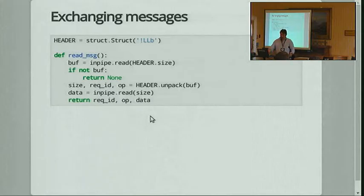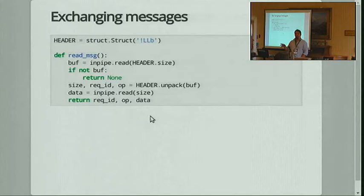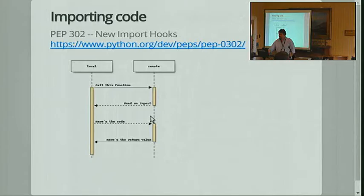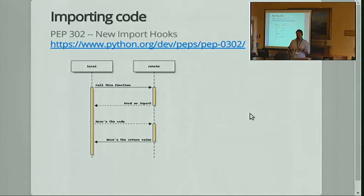Exchanging messages is just chunking stdin and stdout into chunks based on size, with a request ID and an operation code and some other fields — this is slightly simplified. On the remote side that's all done with threads. On the controller side, because you're going to want to parallelize this a lot, it's an async system built into Chopsticks to avoid adding an extra dependency, and to allow it to work with Python 2.7 as well as Python 3.